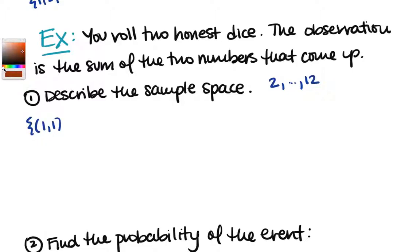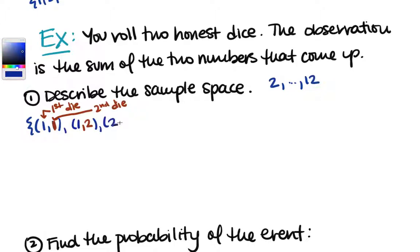We're going to use parentheses notation — the first value is the first die, the second is the second die. Think about them as being two different colors: a blue die and a red die. The only way to get a 2 is (1,1). To get a 3, the blue die could be 1 and the red die 2, or the other way around — (2,1). We need to take into account order for every single one of these.